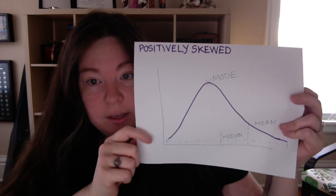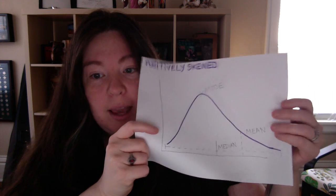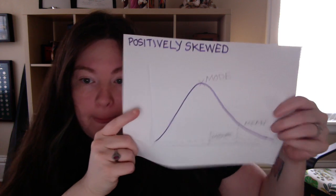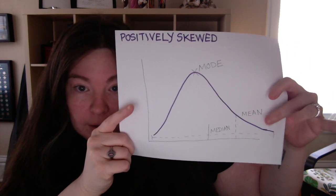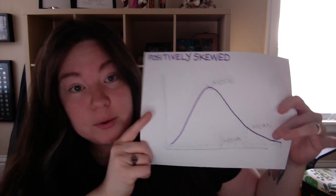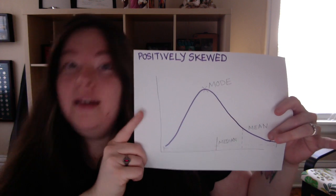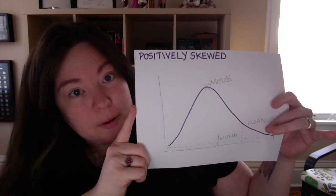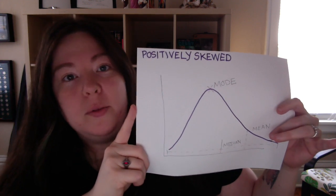So this is a positive skew with a tail that goes out to the right. Again, on a number line, right generally means positive. So that's how mean, median, and mode all apply to skew and what skewed distributions look like.